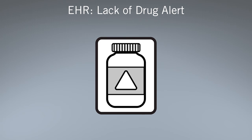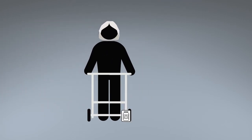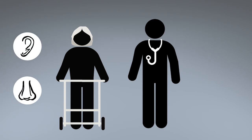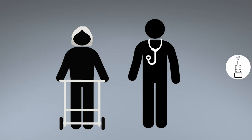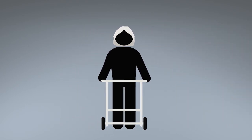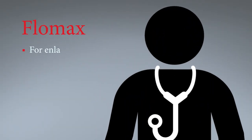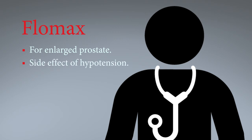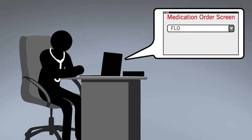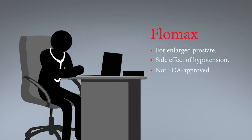This third claim involves a lack of an EHR drug alert. An elderly female saw an otolaryngologist for ear and nose complaints. The physician intended to order Flonase nasal spray. The patient filled the prescription and took it as directed. Ten days later, she went to the ER for dizziness. Two weeks later, the pharmacy sent a refill to the physician at his request. It was for Flomax, which is for enlarged prostate and has a side effect of hypotension. When ordering, the physician typed FLO in the medication order screen. The EHR auto-matched Flomax and the physician selected it. Flomax is not FDA-approved for females. There was no EHR drug alert available for gender.